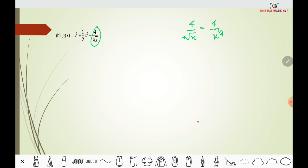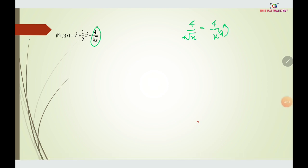Because we need to differentiate this type of fractional function, we bring the x^(1/4) up to the numerator, making the power negative. So the expression becomes 3x³ + (1/2)x² minus 4x^(-1/4).